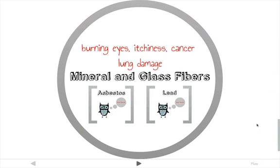The final culprit of poor indoor air quality is mineral and glass fibers. Many are caused by the breakdown of interior duct lining and fireproofing, which can put fibrous mineral particles into the air and result in burning eyes, itchy skin, lung damage, and even cancer.